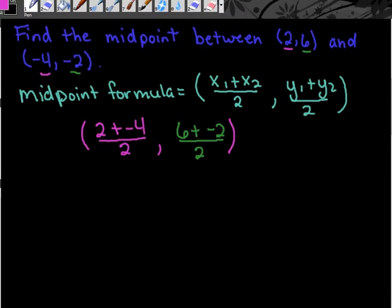If we simplify both of these, 2 plus negative 4 gives us negative 2. 6 plus negative 2 gives us 4. So our final answer and the midpoint would be negative 1 comma 2.